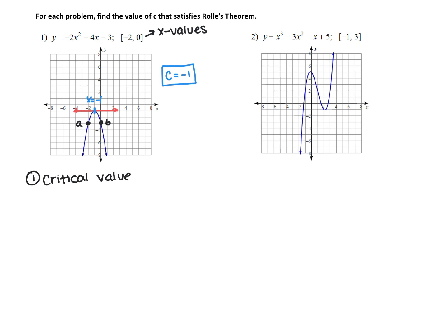And remember, to find a critical value, we're taking the derivative and setting it equal to zero. So if this is my original function up here, I'm going to take my derivative. So f prime of x. I'm going to take the two, bring it in front. So two times negative two is negative four x. Then the derivative of negative four x is just negative four. And then the derivative of the constant three is zero.